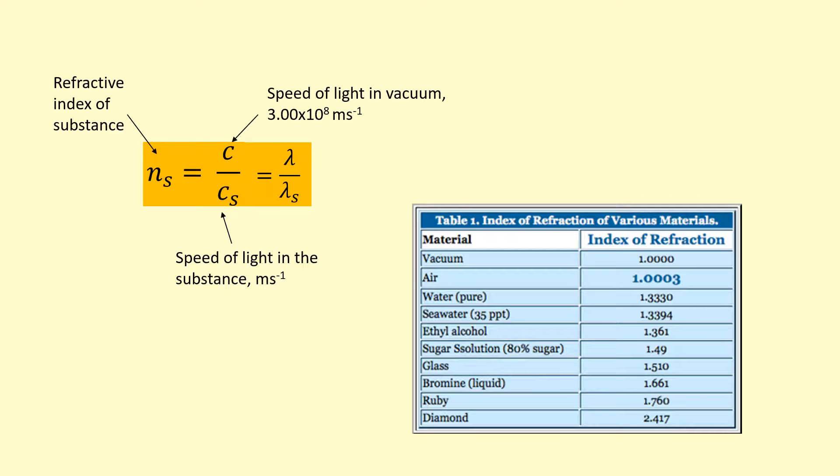This table here shows the refractive index in different materials, and at the top, we've got the fastest, which is in vacuum, 3 times 10^8 meters per second. And as you can see, in air, it's pretty much the same. So from now on, we'll be using air as 1.00 as well.